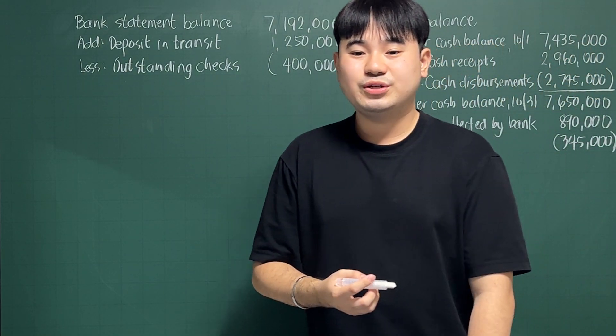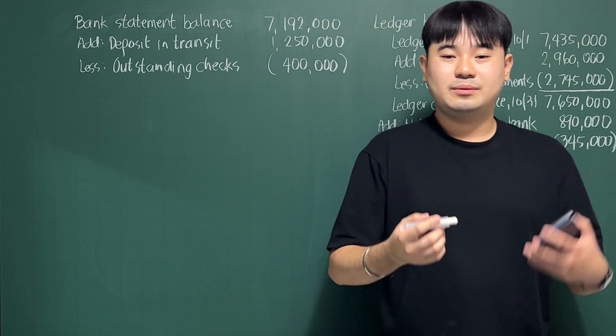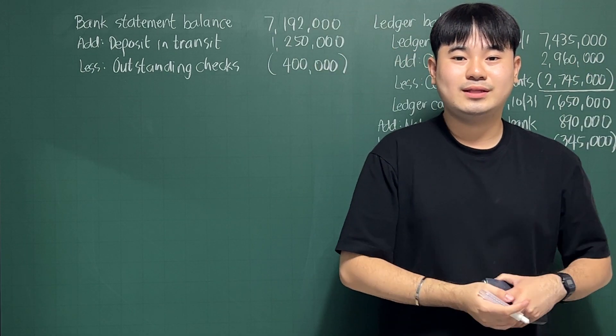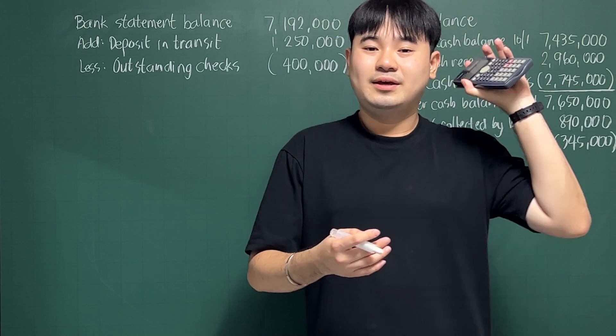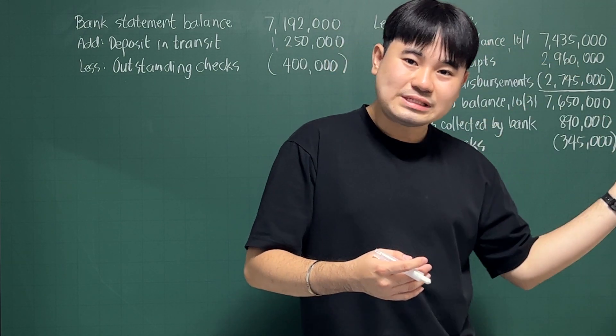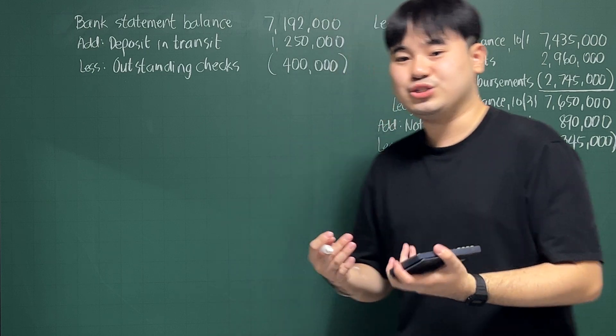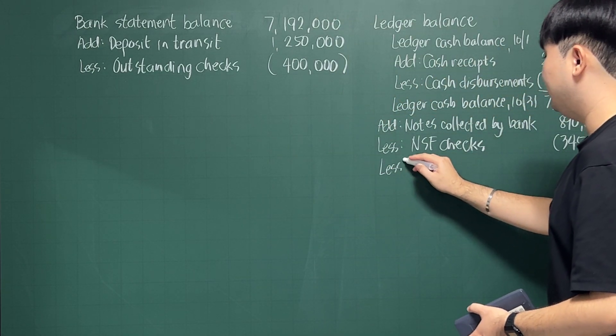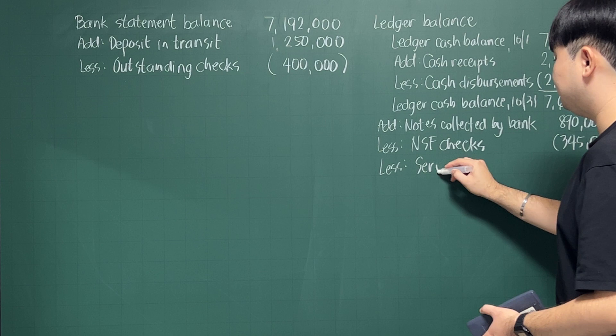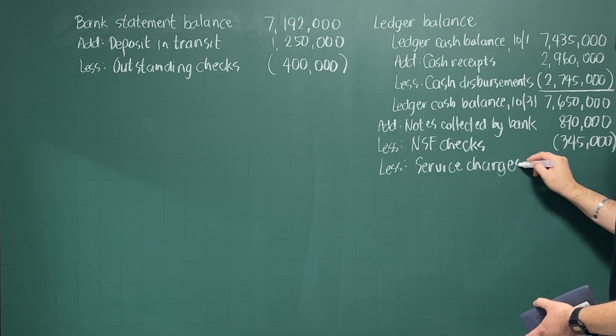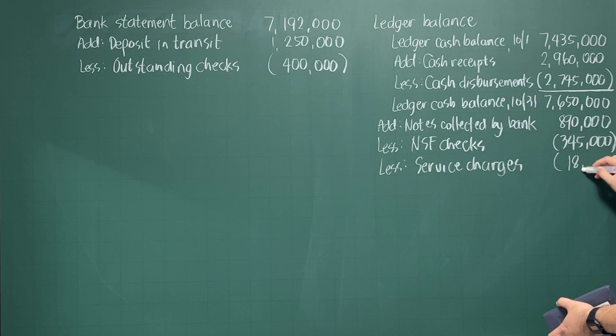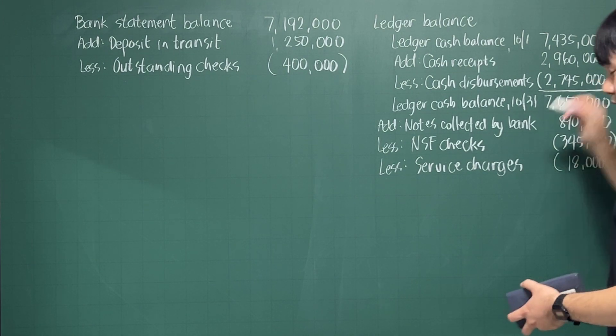Next, bank service charges, $18,000. So the bank statement tells you that they deducted $18,000 from your account due to bank service charges. The book side is not yet updated as to that. So you also have to deduct your bank service charges.